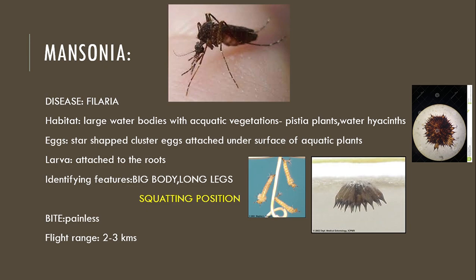Moving on to Mansonia mosquito. It causes the disease called filaria. It lives in large water bodies with aquatic vegetation like Pistia plants and water hyacinths. Eggs of Mansonia mosquito are laid in a star shape, attached on the surface of aquatic plants, as we can see in this picture. Larvae of Mansonia get themselves attached to the roots and are also bottom feeders. Identifying features of the Mansonia adult mosquito: it has a big body and long legs, so it acquires a squatting position. Bite is painless and it has a flight range of 2 to 3 kilometers.